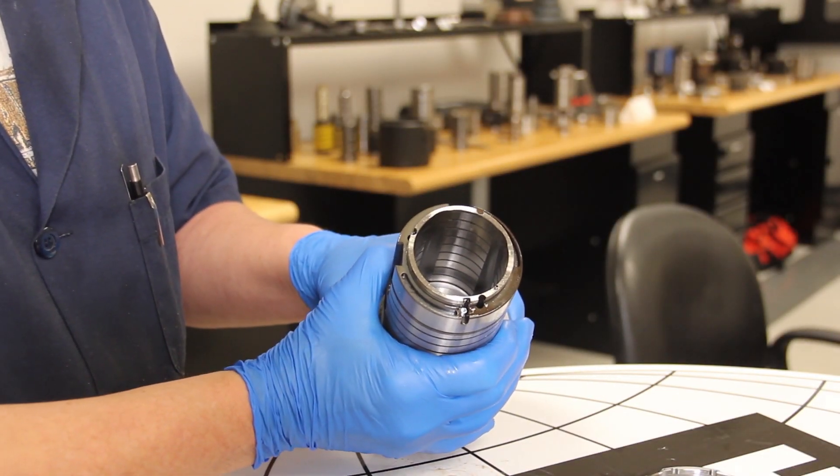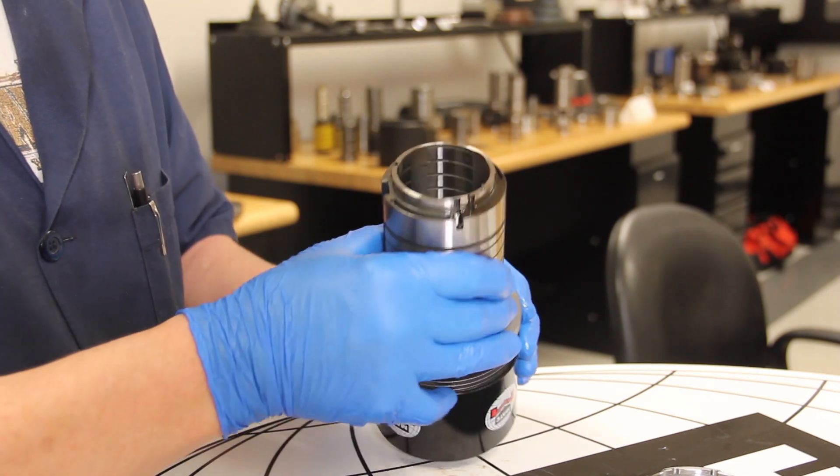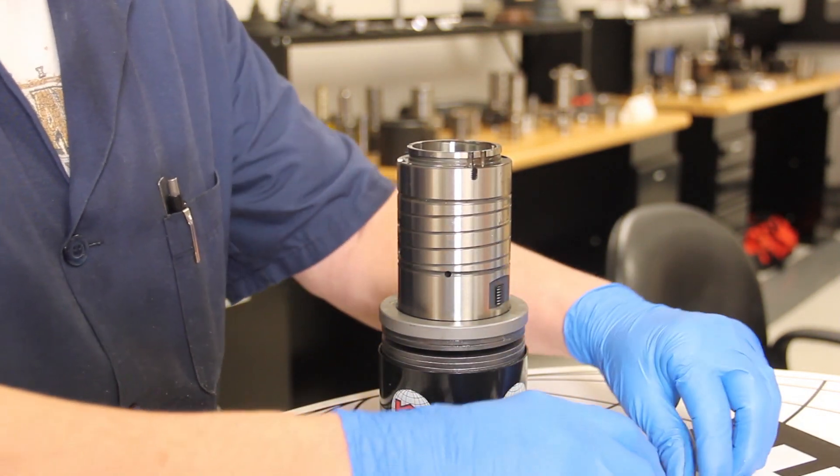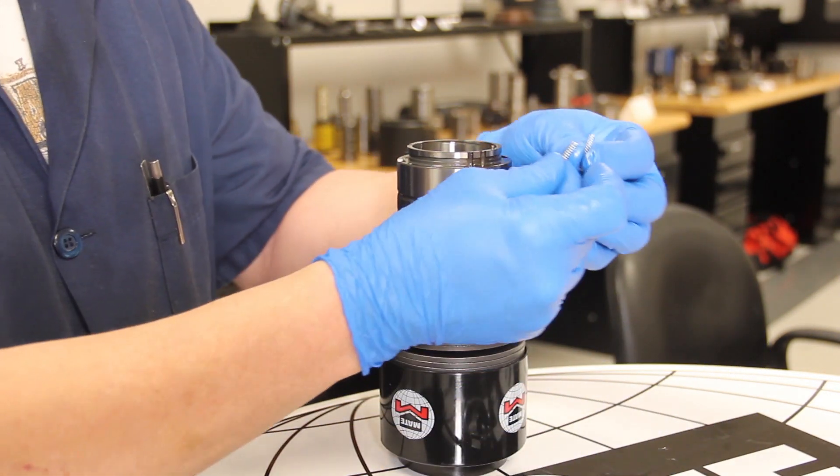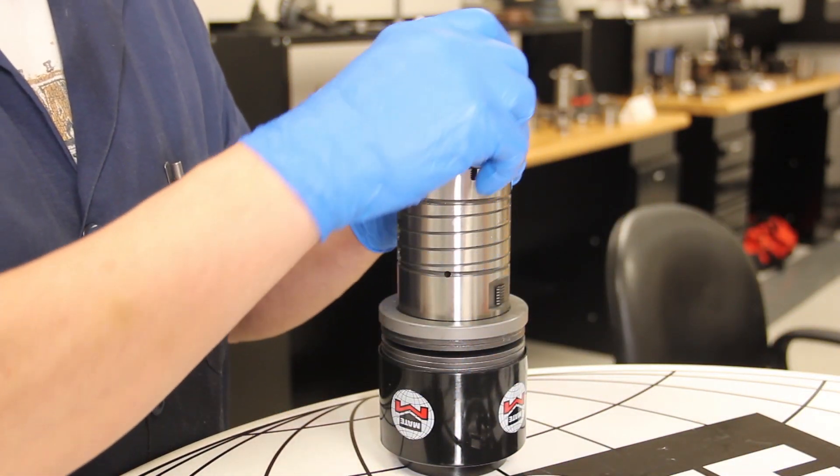To reassemble, we first do an inspection. Then we will install our springs into the ejector pin slots. For this C-Station, there will be three springs to install.